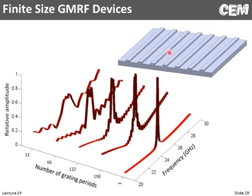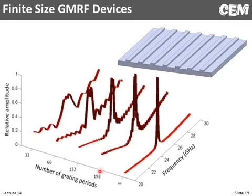For a conventional Guided Mode Resonance Filter made out of something with a dielectric constant around 2.5, here's its response for the infinite case — a nice reflection peak. If we only build it out of 33 periods, we see some ripples but not much. At 66 periods we're starting to get a spike. At 132 periods we're getting a pretty strong spike but not as strong as the infinite case. By 200 periods, I would say that's looking pretty close to the infinite case. I would conclude that the device needs to be about 200 periods to behave like the infinitely periodic device.